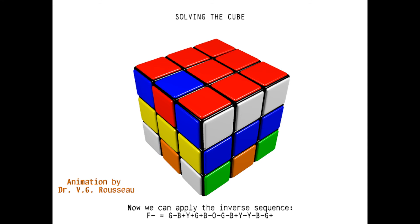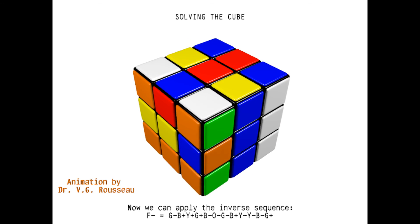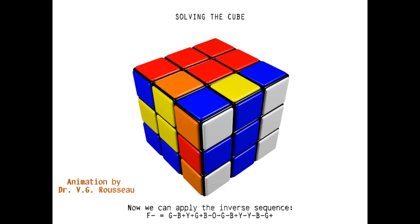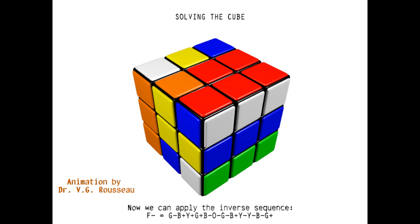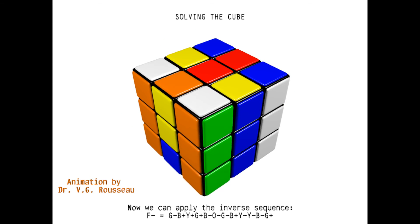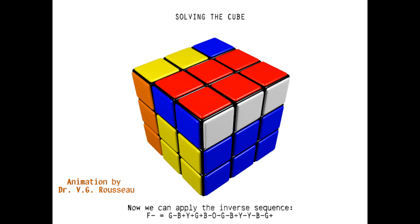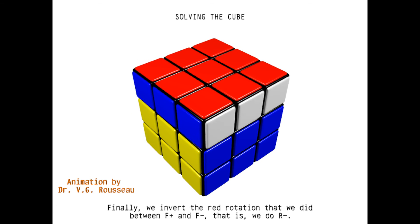The inverse sequence is green negative, blue positive, yellow positive, green positive, blue negative, orange negative, green negative, blue positive, yellow negative, yellow negative, blue negative, green positive, and we finish with red negative.